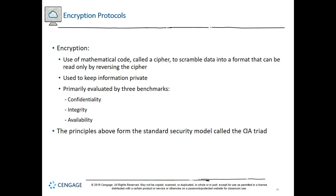The purpose of encryption is to keep information private. Many forms of encryption exist, with some being more secure than others. Even as new forms of encryption are developed, new ways of cracking their codes will emerge also. To protect data at rest, in use, and in motion, encryption methods are primarily evaluated by three benchmarks: confidentiality, integrity, and availability. Together these three principles form the standard security model called the CIA — confidentiality, integrity, and availability — triad.